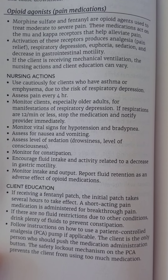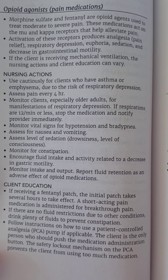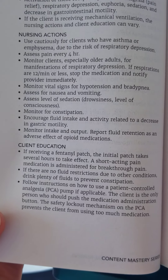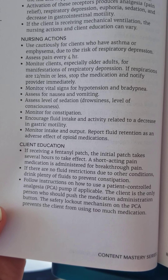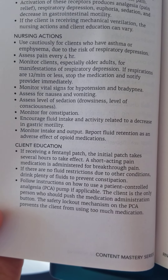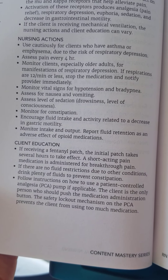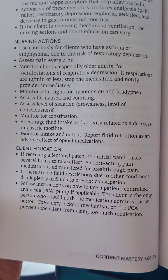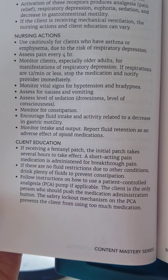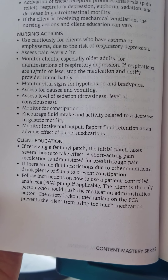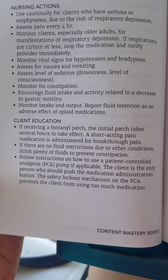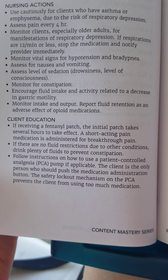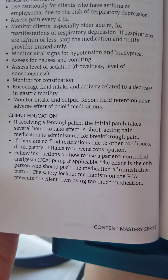If the client is receiving mechanical ventilation, nursing actions and client education can vary. Opioid agonists should be used cautiously with clients who have asthma or emphysema due to the risk of respiratory depression. Assess pain every four hours, and monitor clients — especially older adults — for manifestations of respiratory distress. If respirations are 12 per minute or less, stop the medication and notify the provider immediately.